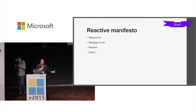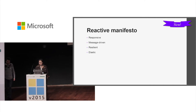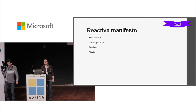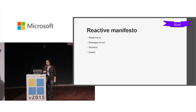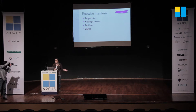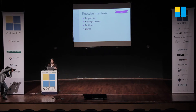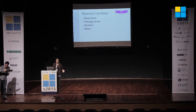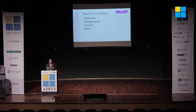To jump back — the reactive manifesto was recently updated, I think mid last year. The goals are now: responsive, message-driven, resilient, and elastic. I'm going to go through each of these four topics and show you how writing your services in F# helps you actually achieve all four of them quite easily.